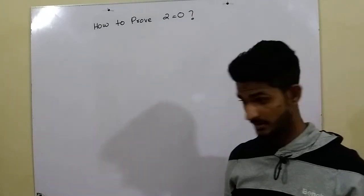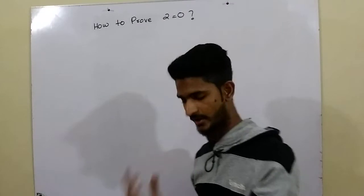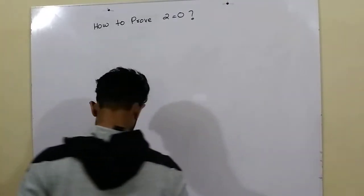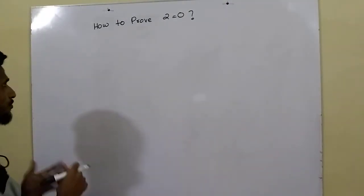Isn't it weird that 2 is actually equal to 0? Let's try with this one. Okay, so what we have to do with this? How to prove it?